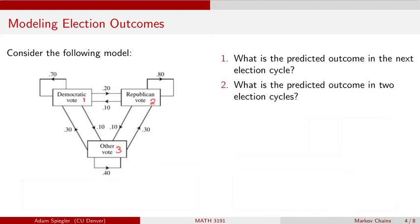We collect our election results from this current election, and based on the voting patterns in this graph and the current results, we'll try to make predictions about the next election cycle and two election cycles out. Step one: we want to set up the transition matrix P to model this system.